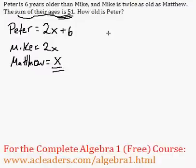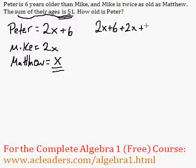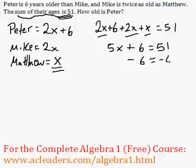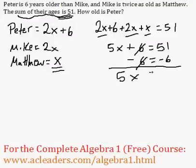The sum of all their ages is 51, so we know that 2x plus 6 plus 2x plus x equals 51. So 2x plus 2x plus x is 5x, plus 6, equals 51. Now we can take away 6 from both sides of the equation: 5x is equal to 51 minus 6, which is 45.